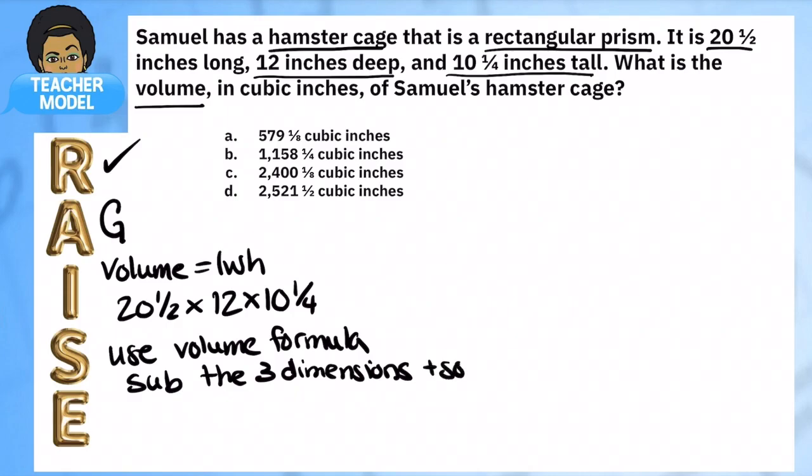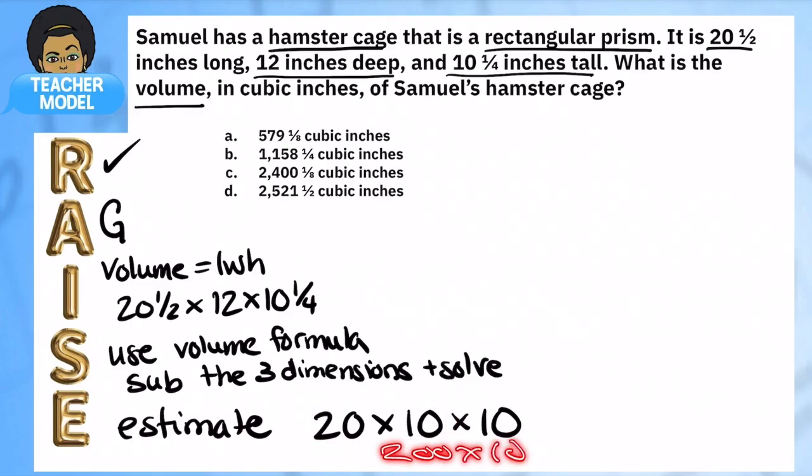To eliminate, I'm going to estimate. So what I mean is: 20 and a half times 12 times 10 and a half - let's just approximate here. What if it was just 20 times 10 times 10? I'm making my numbers super duper friendly. So 20 times 10 is 200, and 200 times 10 is going to be 2,000. My answer is going to be about 2,000. So I know that the first two are way too small because my number should be somewhere around 2,000, so either C or D is going to be correct.